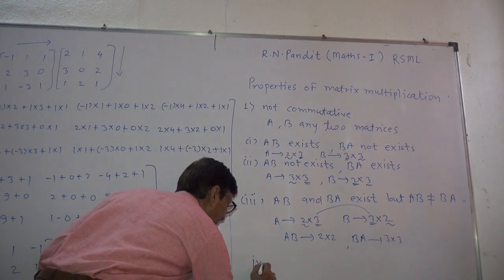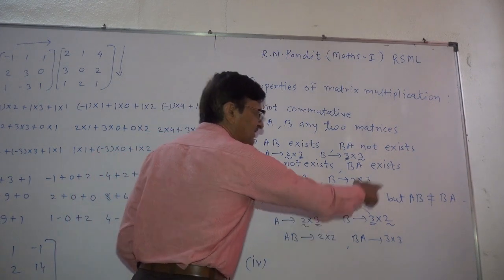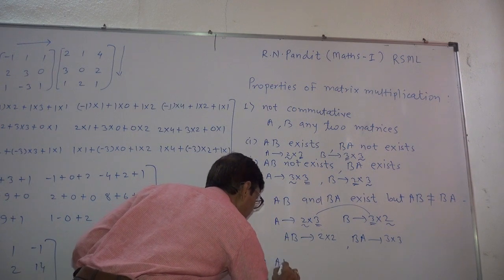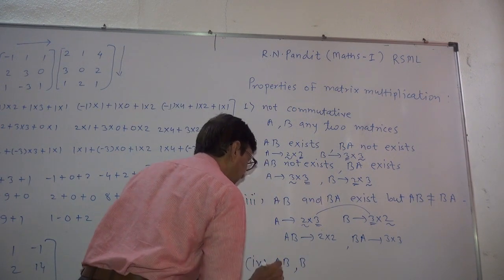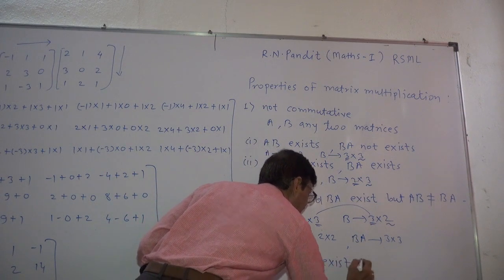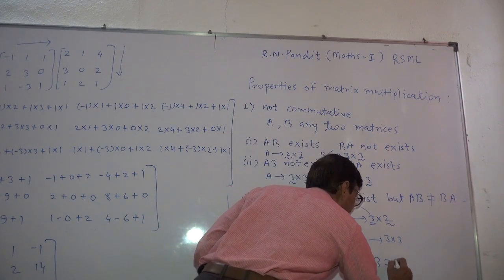Fourth situation arises here, that is AB and BA exist and AB is equal to BA. Both the products exist and here AB is same as BA.